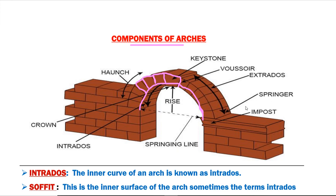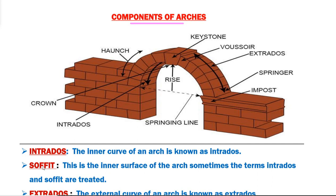Let us see what the components of arches are. The first component is intrados. Intrados is the inner curve of an arch. In this image we can see the arch, and this portion is the inner curve of an arch. This curve is known as the inner curve of an arch, and it is known as intrados.